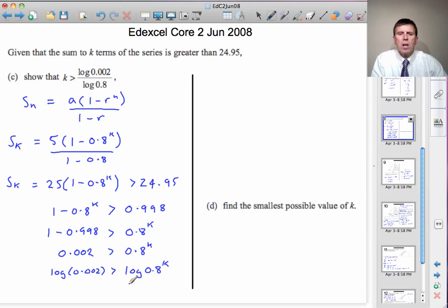Now we can use our rules of logs. Log of a to the power b is b log a, so that k can be brought to the front. So we get the log of 0.002 is greater than k log 0.8.